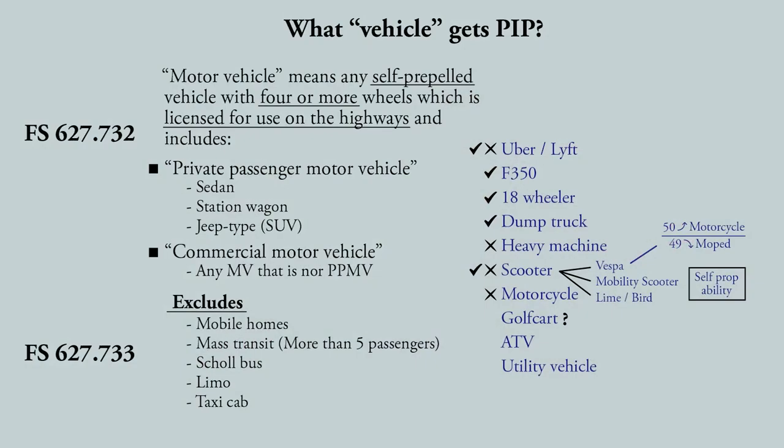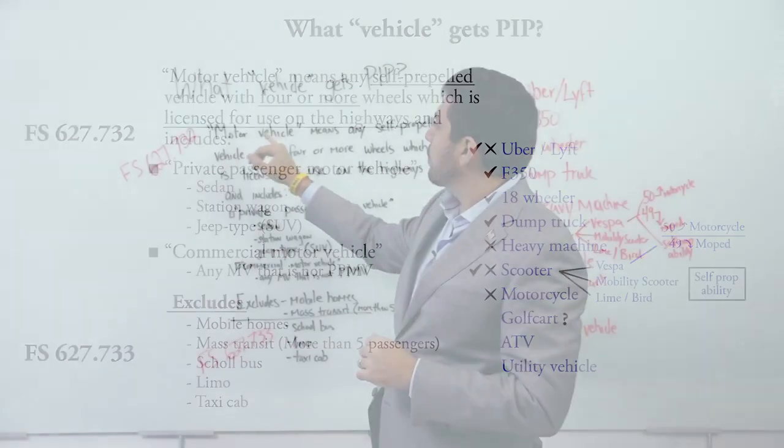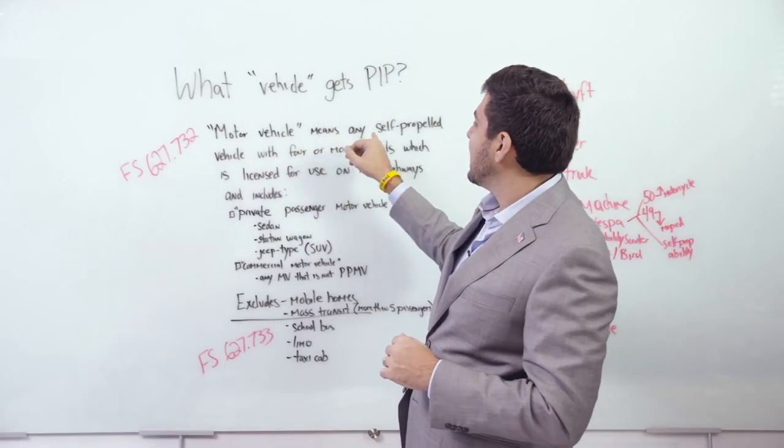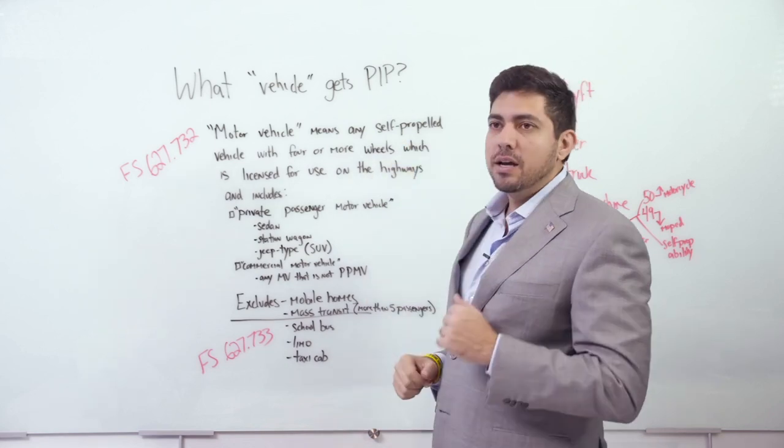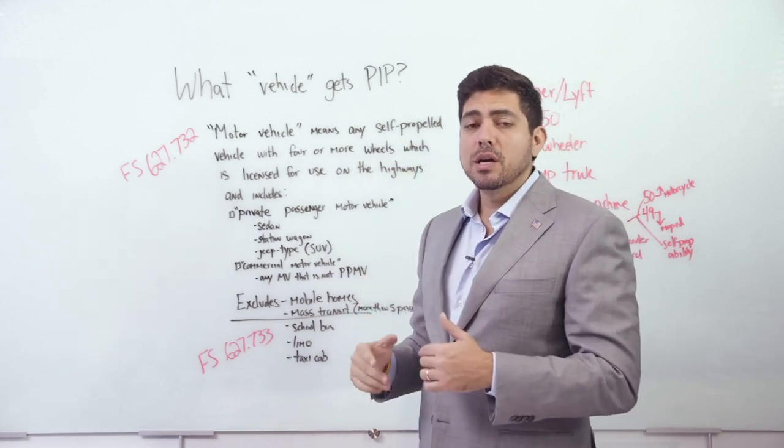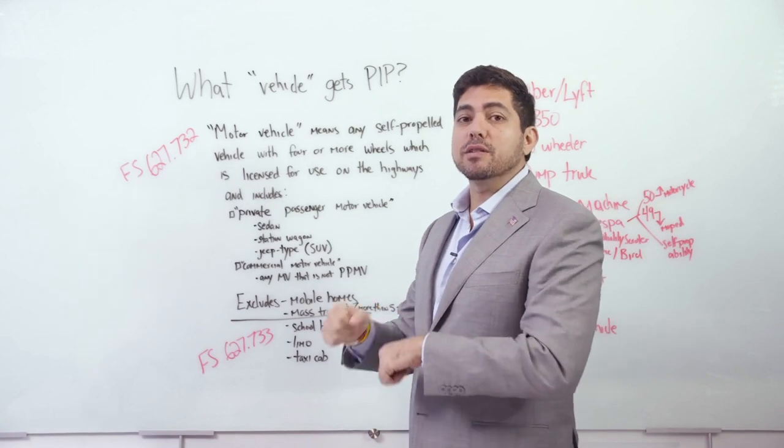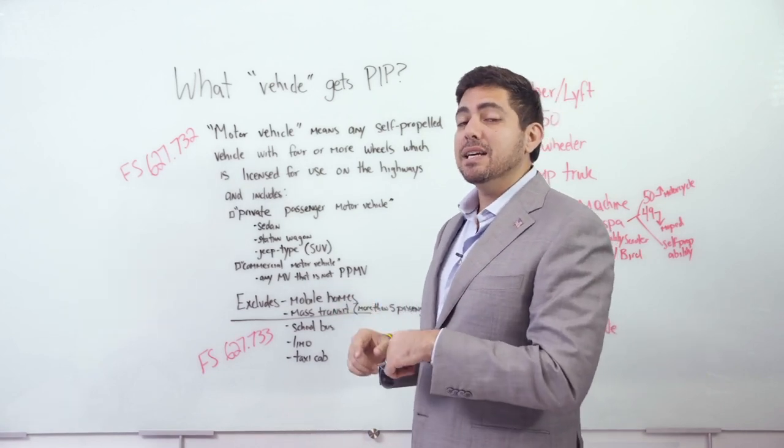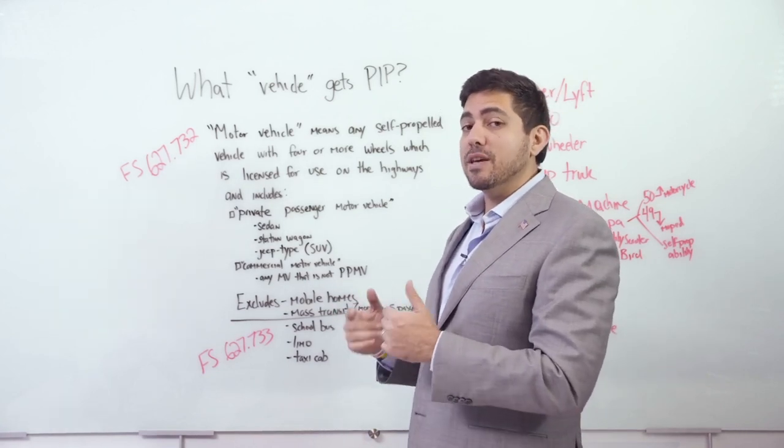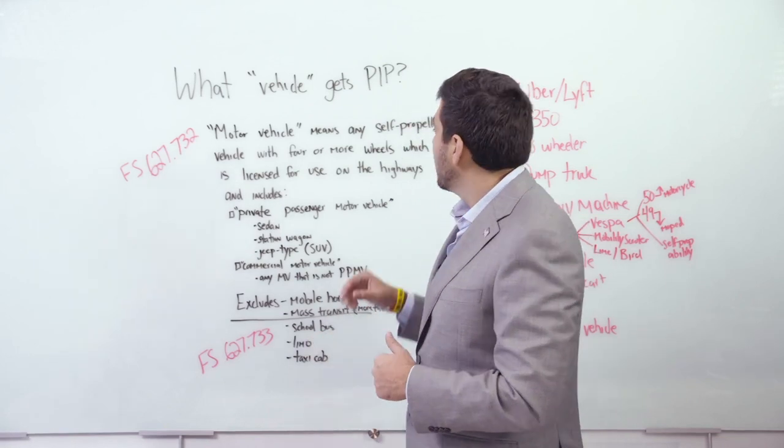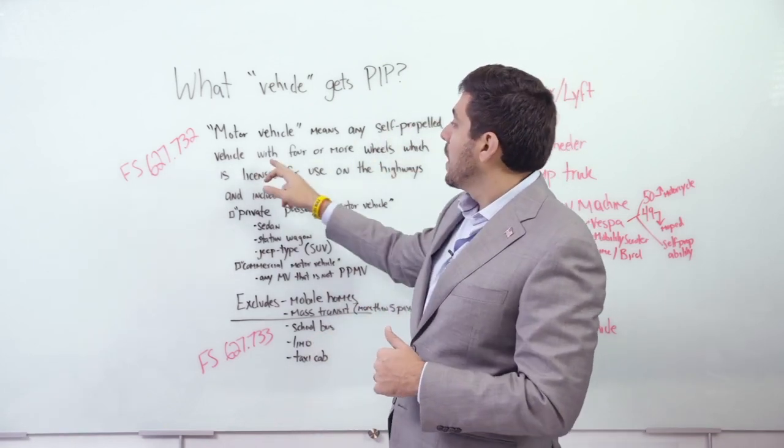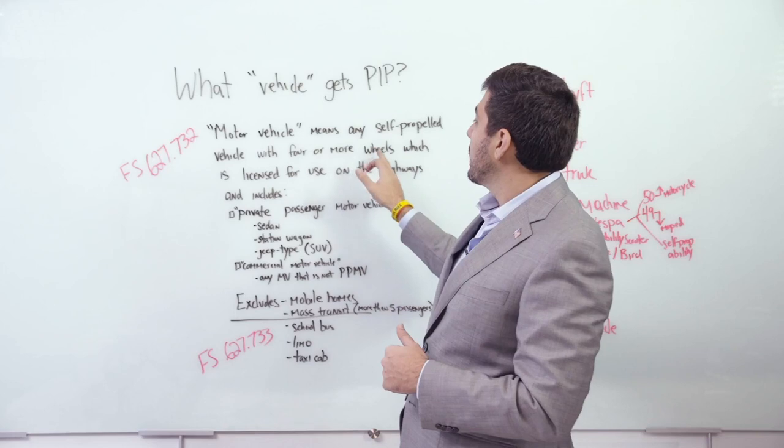So what vehicle gets PIP? I get this question all the time. We're going to go through all these weird, wacky types of vehicles. But the bottom line is if somebody's in a motor vehicle, what is a motor vehicle? They define it as any self-propelled vehicle with four or more wheels.